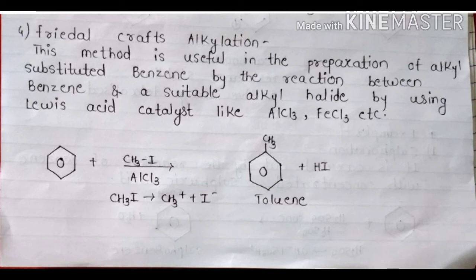Fourth is Friedel-Crafts alkylation. This reaction is useful in the preparation of alkyl-substituted benzene by the reaction between benzene and a suitable alkyl halide using Lewis acid catalyst like AlCl3 or FeCl3. The reaction is benzene reacted with methyl iodide in presence of AlCl3. CH3I will break into CH3 plus and I minus. The product will be toluene, and I minus and one H from benzene will become HI.